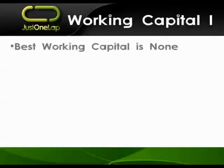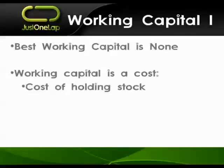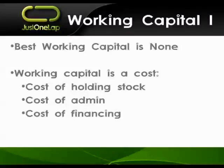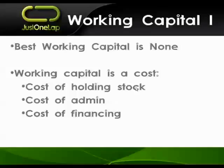Working capital is simple: the best type of working capital is none. Working capital is a cost — you want to minimize it. The cost includes the cost of holding stock, admin costs from managing debtors, creditors, and inventory, and the cost of financing. If you didn't need working capital, you wouldn't need those funds; you could lower the amount of equity needed to finance the business and increase your return on equity — which is always the most critical ratio. The more efficient the business is, the lower their working capital will be, obviously depending on sector.